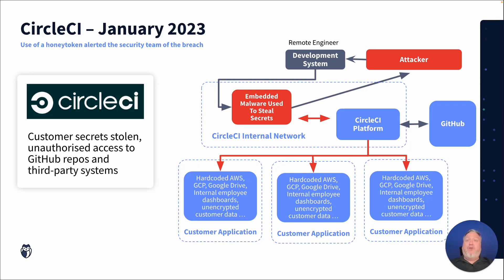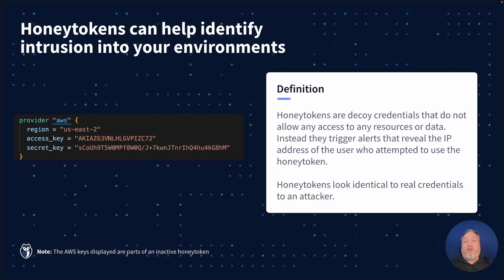It took the CircleCI team almost two full weeks to detect this breach. Ideally, you'd want to discover an intruder much faster. This is where the GitGuardian HoneyToken module comes into play. Honey tokens are decoy credentials that don't allow any real access, but instead trigger alerts that reveal the IP address of whoever tried to use them.